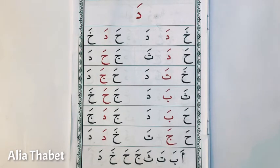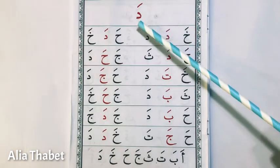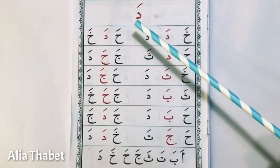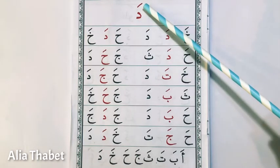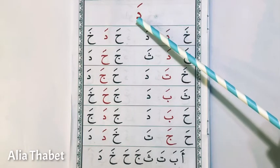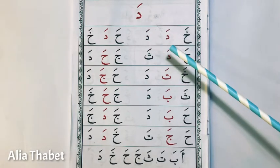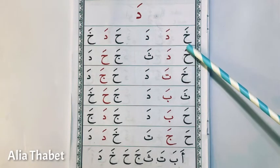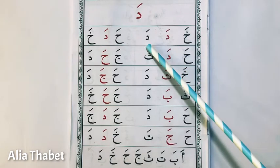And this letter is دَا — دَا. Of course with the vowel of fathah: دَا. Start reading in sha Allah: خَا، دَا، دَا.